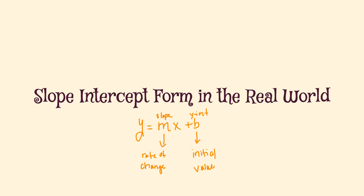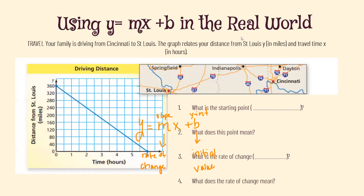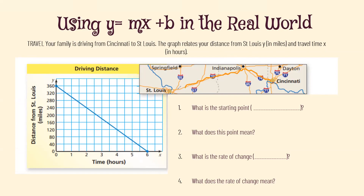Let's dive in and look at some of these problems. Your family is driving from Cincinnati to St. Louis. The graph relates your distance from St. Louis in miles and travel time in hours. We're starting here in Cincinnati and going to end up in St. Louis. The y-axis represents our distance from St. Louis, and the x-axis represents how long we have been traveling in hours.